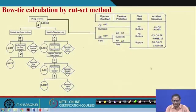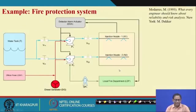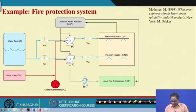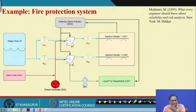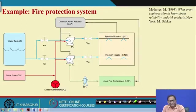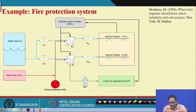Now I will show another example. As mentioned, bow tie uses fault tree and event tree. Here I will show how a fault tree is used inside the event tree, because the protection configuration may also fail, and you need to find out the failure probability of those configurations.